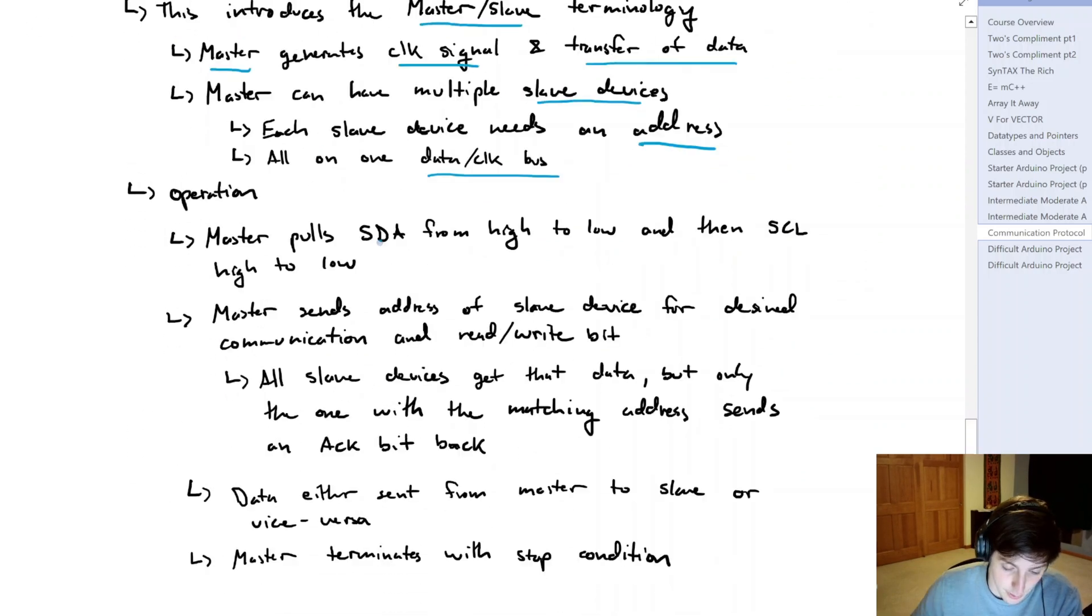So if we get into the operation, we have a master that would pull SDA from high to low, and then SCL. Then the master will send the address of the slave device that it's trying to communicate with, and additionally a read or write bit. So because everything is connected on the same bus, all of these slave devices get the address that the master sends out. But only the slave device with the matching address is going to send an acknowledgement bit back. So then once we have this established communication, we can either send data from the master to the slave or vice versa.